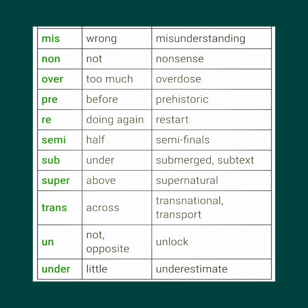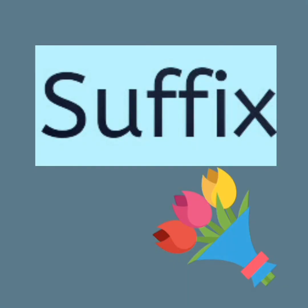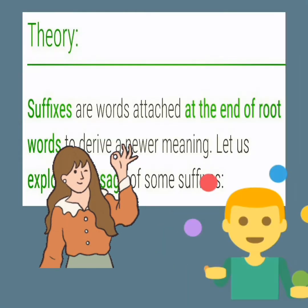Mis- means 'wrong'; example: misunderstanding. Non- means 'not'; example: nonsense. Over- means 'too much'; example: overdose. Pre- means 'before'; example: prehistoric. Re- means 'doing again'; example: restart. Semi- means 'half'; example: semifinals. Sub- means 'under'; examples: submerge, subtext. Super- means 'above'; example: supernatural. Trans- means 'across'; examples: transnational, transport. Un- means 'not or opposite'; example: unlock. Under- means 'little'; example: underestimate.